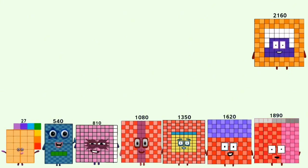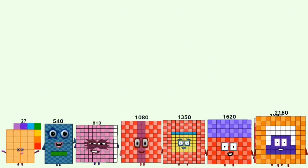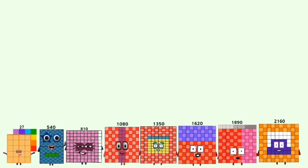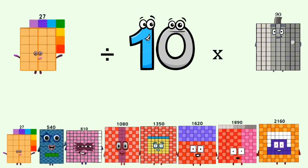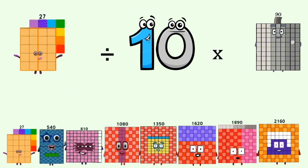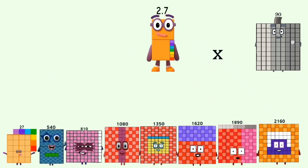Equals 2,160. 27 divided by 10 equals 2.7.